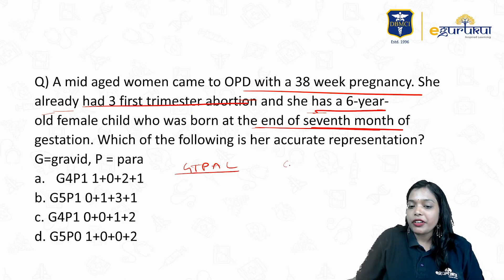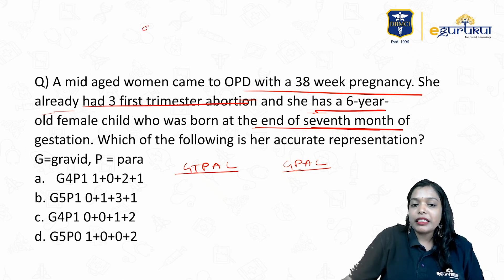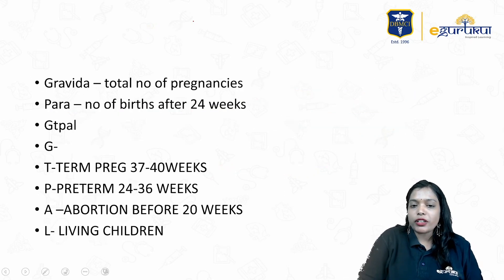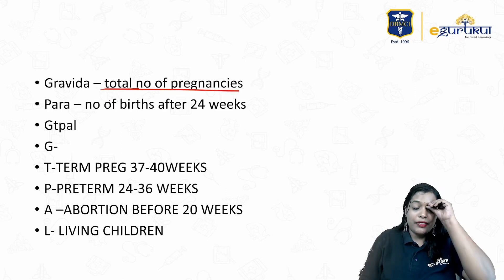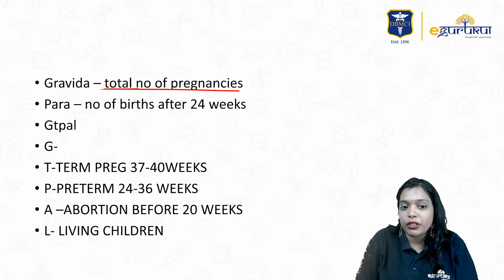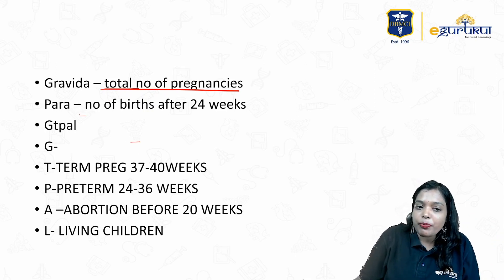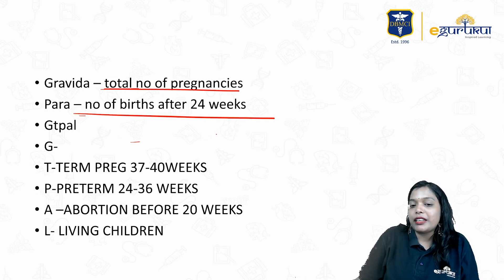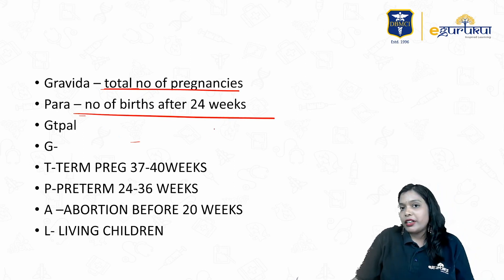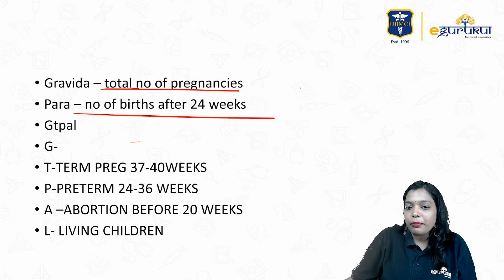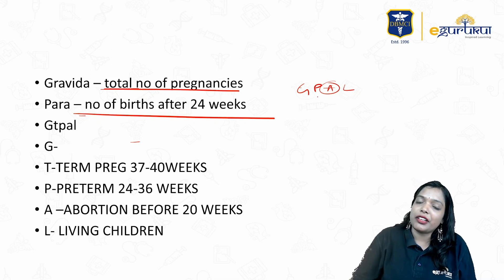We have two methods of interpretation: the obstetric codes G-PAL and G-T-PAL. G stands for Gravida — total number of pregnancies irrespective of the outcome, and it includes the current pregnancy. Para means number of births that have crossed the period of viability, that is after 24 weeks, and it does not include the current pregnancy. Abortion refers to all pregnancies which ended before 24 weeks. L — living — means how many alive kids you have.